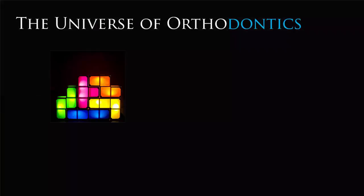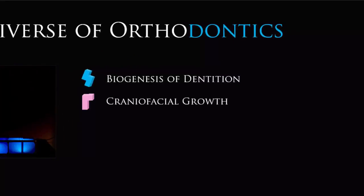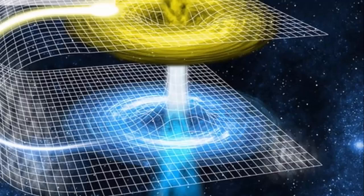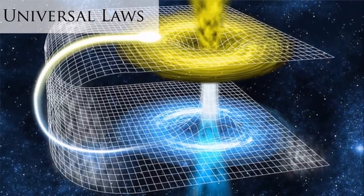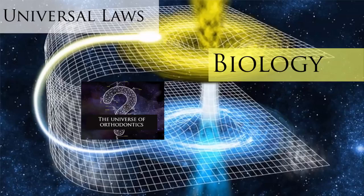Several areas of knowledge and related disciplines are needed for understanding this universe. We can list the biogenesis of dentition, craniofacial growth, genetics, embryology, metallurgy, surgery, orthodontic techniques, and phonology as key pieces of this puzzle. We cannot forget that the universe of orthodontics is part of a larger whole, which is governed by universal laws. These laws sustain and govern any area of knowledge, and I would say mainly orthodontics.